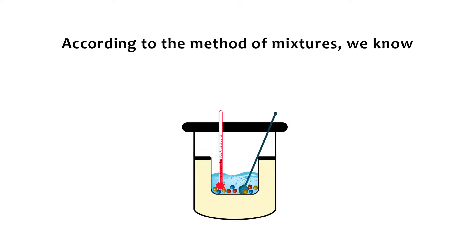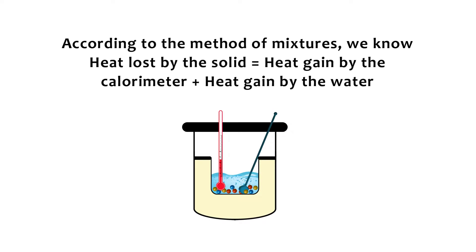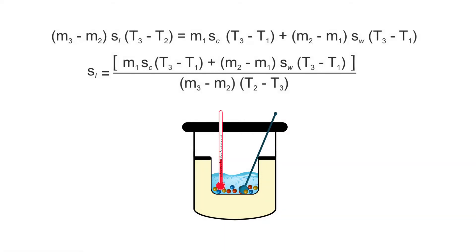According to the method of mixtures, we know the heat lost by the solid is equal to the heat gained by the calorimeter plus the heat gained by the water. M3 minus M2 into SL into T2 minus T3 is equal to M1 into SC into T3 minus T1 plus M2 minus M1 into SW into T3 minus T1. SL is equal to M1 SC into T3 minus T1 plus M2 minus M1 into SW into T3 minus T1 divided by M3 minus M2 into T2 minus T3.